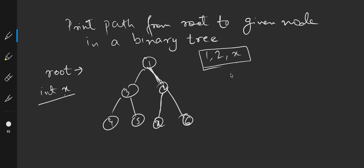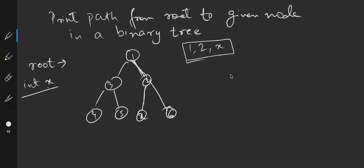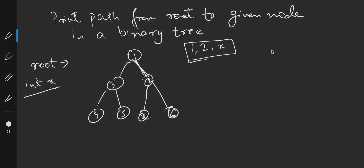So how are we going to do this? We will traverse through the binary tree starting from the root and check if the node value equals X. It is given that X will be present in the tree, and each node has a unique value — so no value, including X, can appear multiple times. X will appear exactly once, and we have to find the path to it.